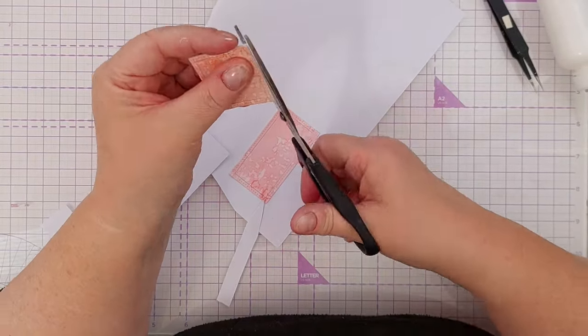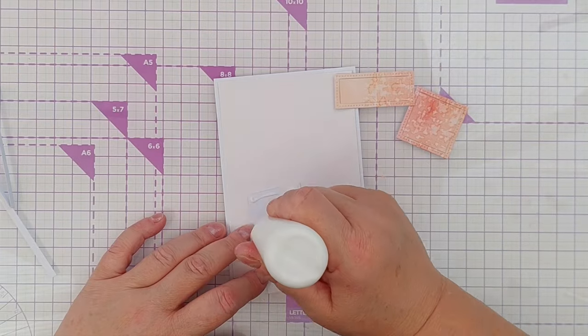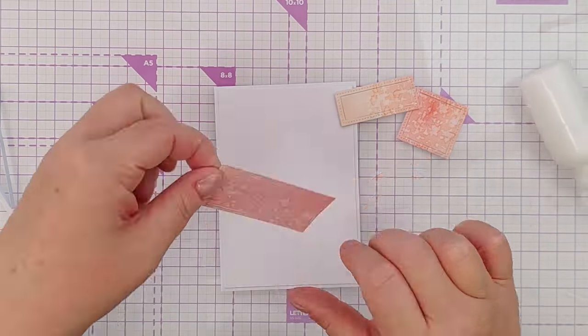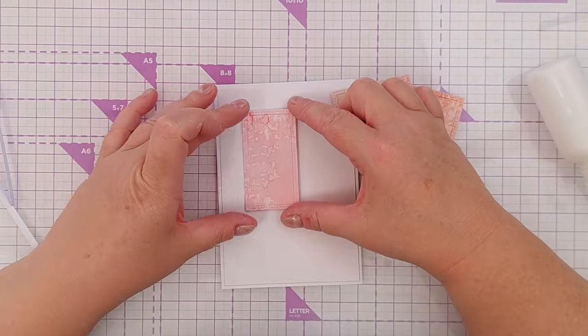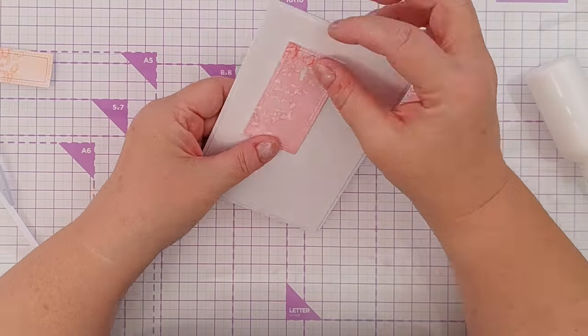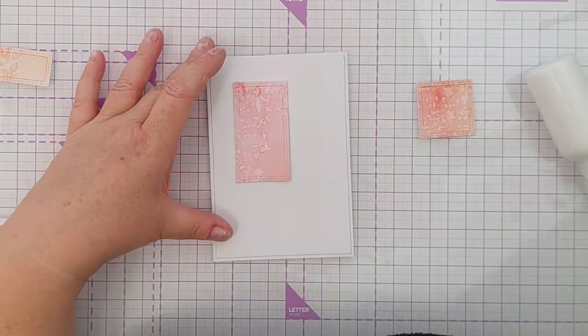Once those were all cut out I set about arranging them on the front of my card. I've got a stitched rectangle panel of smooth white cardstock on the front of my card and the card blank I think is about four by six inches.